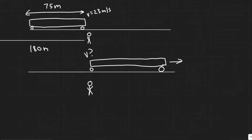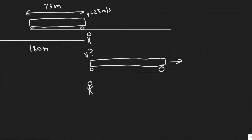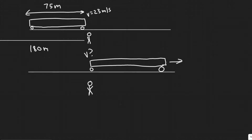In this problem, we're told a 75-meter long train begins uniform acceleration from rest. The front of the train has a speed of 23 meters per second when it passes a railway worker who is standing 180 meters from where the front of the train started. What will be the speed of the last car as it passes the worker?